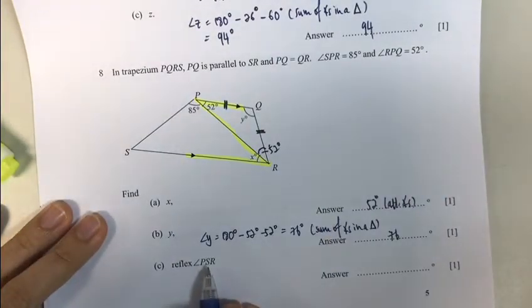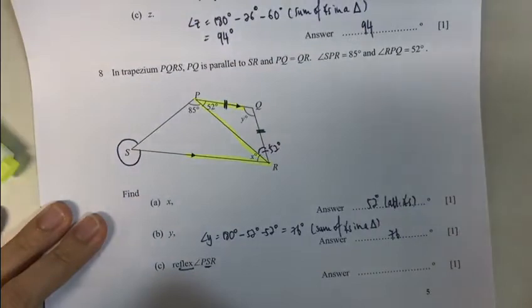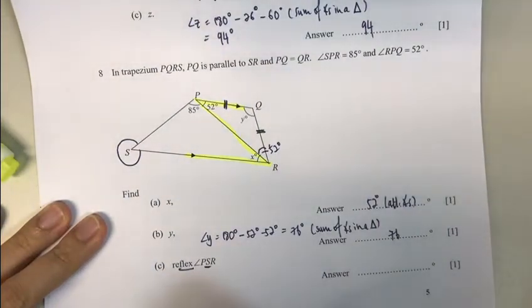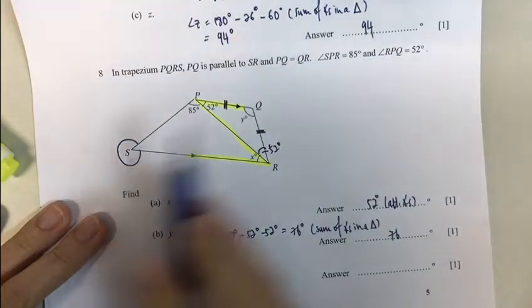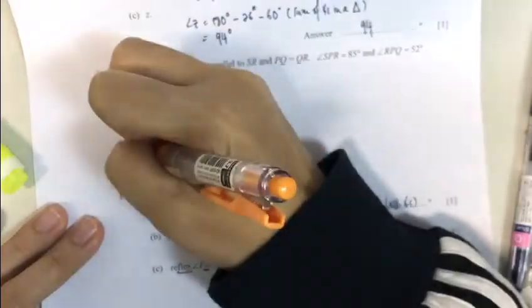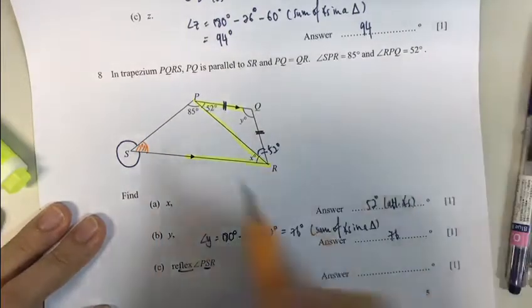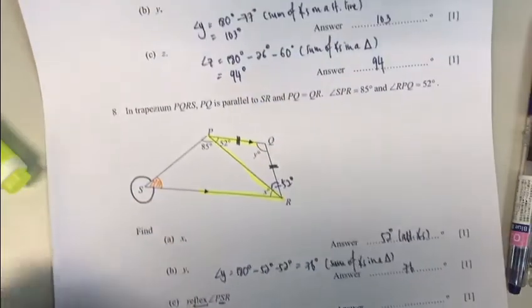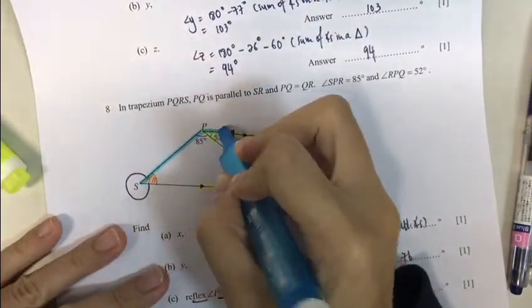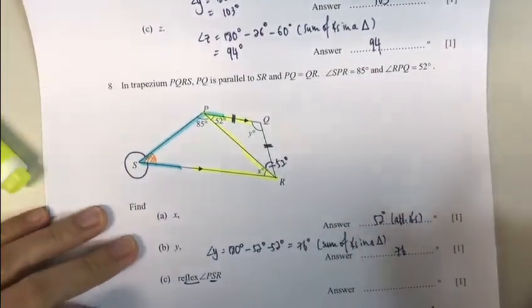And now reflex angle PSR. So reflex tells me it's on the outside. I want to know the big angle outside. How do I find that? Well, I can find this if only I know what this is. But do I know what this is? I can either do this triangle or I can also because it's part of parallel lines. This is my Captain Planet. I can find all of these.